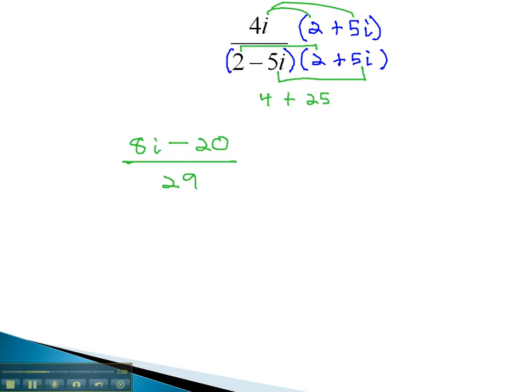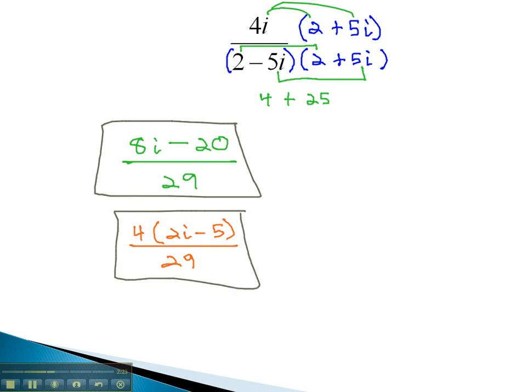We could factor the numerator to see if it reduces, by pulling out a factor of 4, leaving 2i minus 5 over 29. But we'll find that this does not reduce. Either of these two answers would be considered the correct simplified solution.